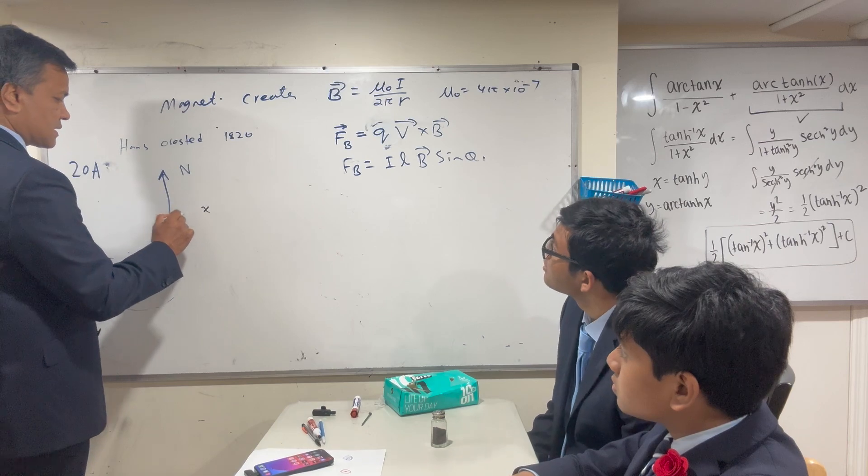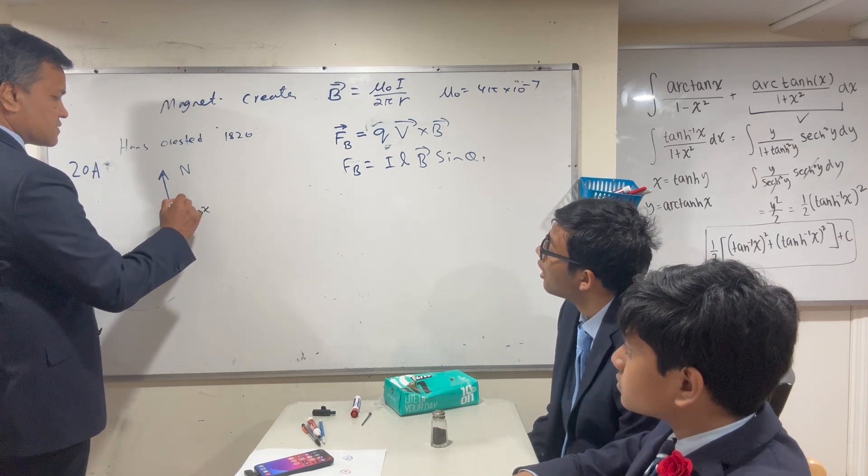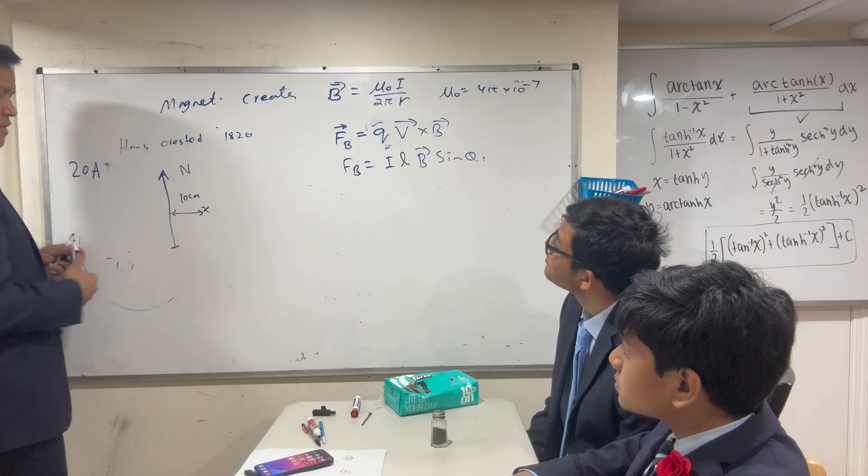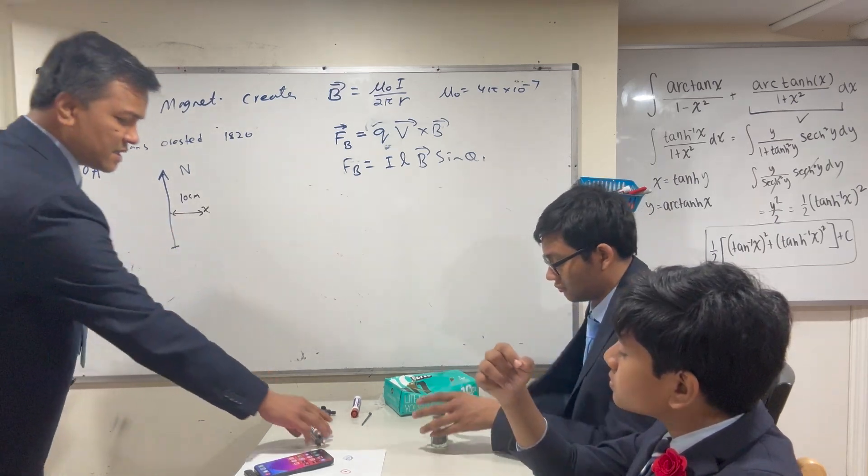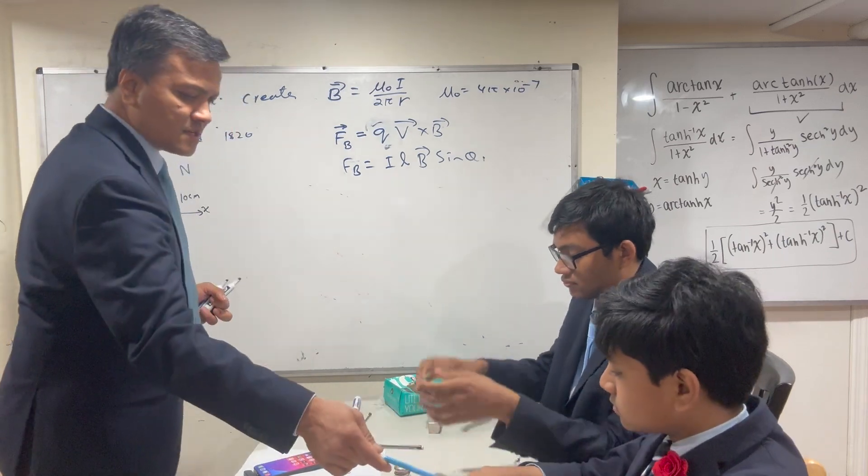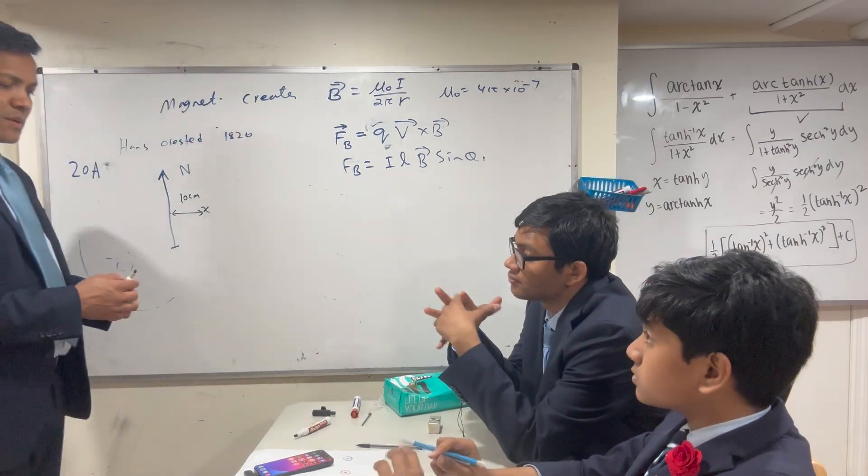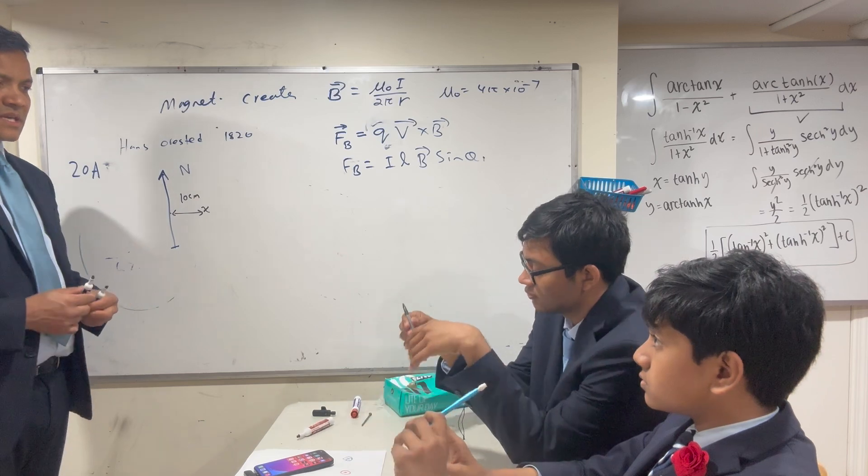Can you give me the distance? 10 centimeters. This is like a cylinder if you have a wire. Can you do the right-hand rule? Let's practice. Take that pencil. Hold the pencil at the direction of the wire current.